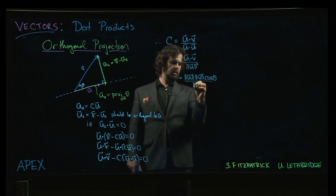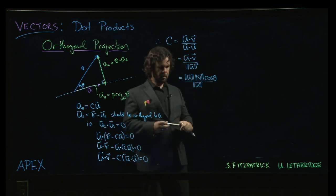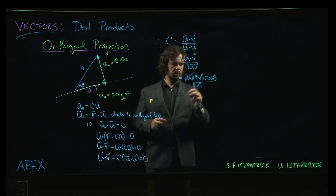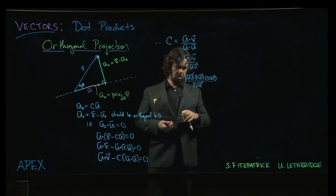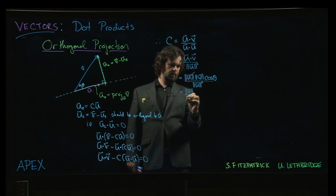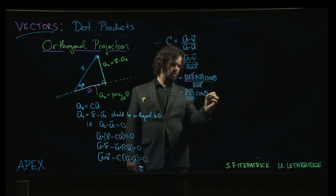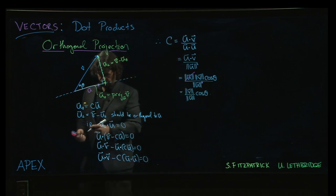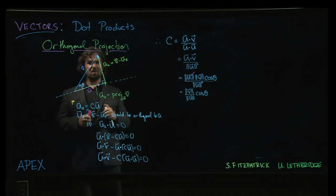Divided by magnitude of u squared. And we can simplify a little bit like so. So what we get is c is the magnitude of v divided by the magnitude of u times cos theta. That's the value for this c. We did it. We've got our result.